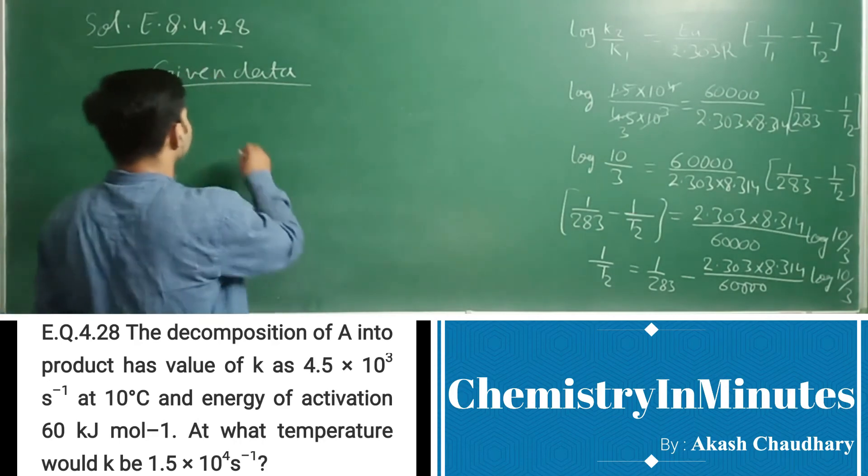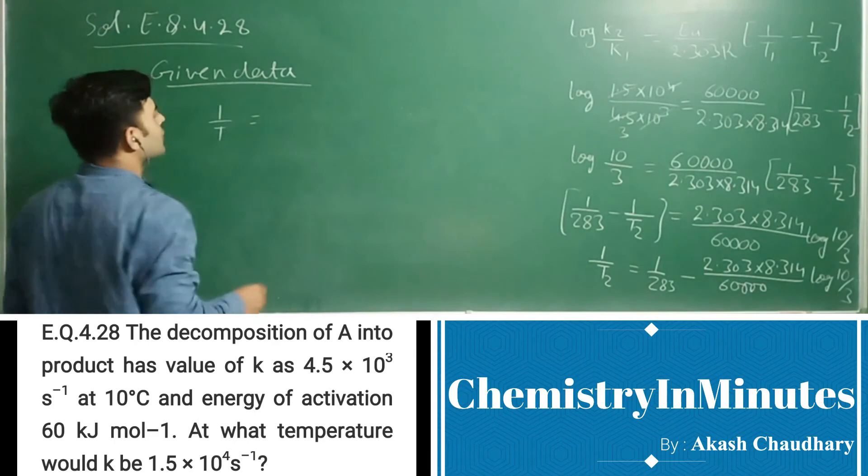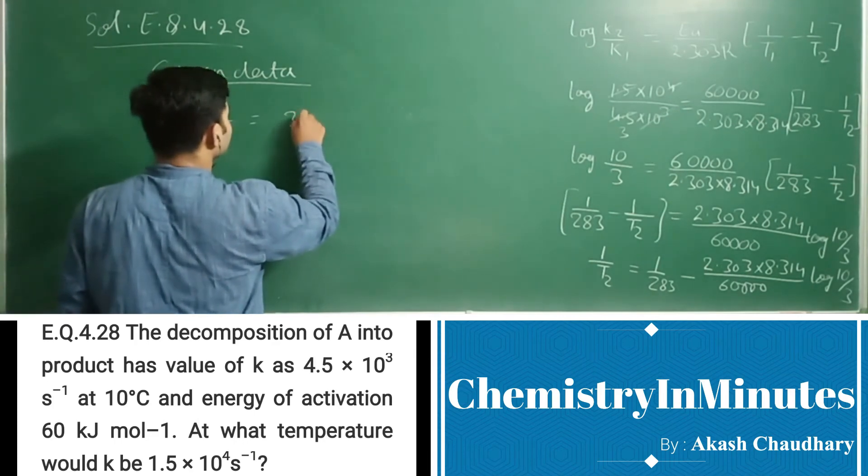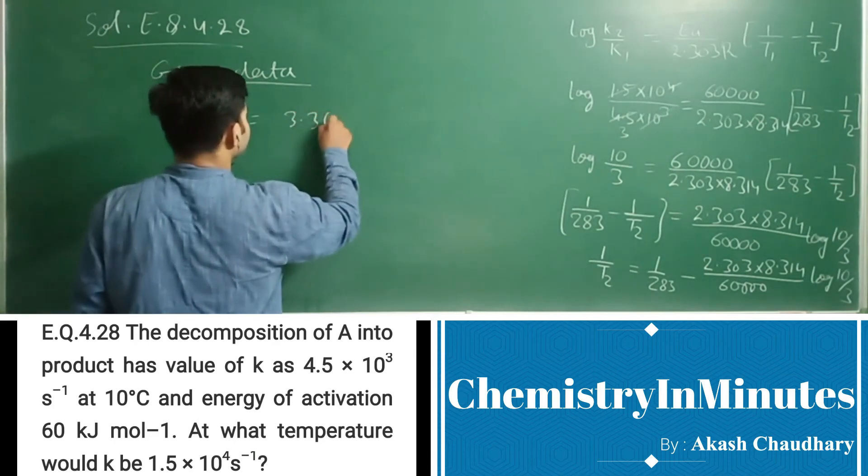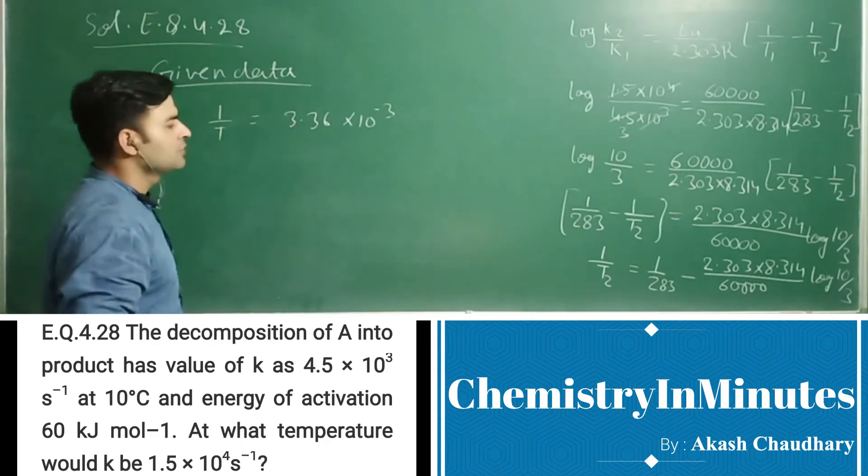1/T2 will come as 3.36×10^-3 on solving that.